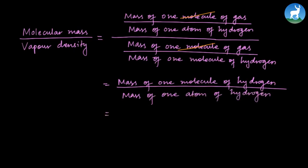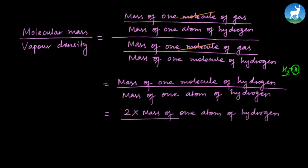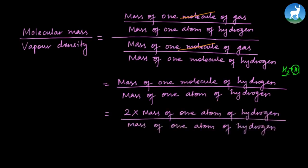Now, hydrogen is a diatomic molecule, so one molecule of hydrogen H2 contains 2 atoms of hydrogen. Therefore, mass of one molecule of hydrogen equals 2 times the mass of one atom of hydrogen. The mass of one atom of hydrogen cancels out as a common term.